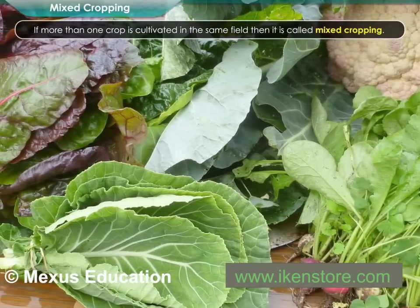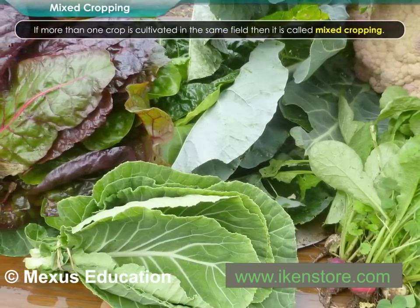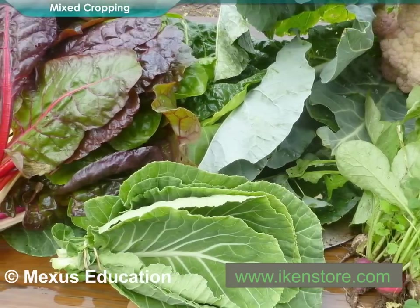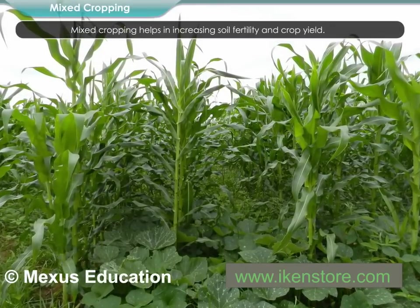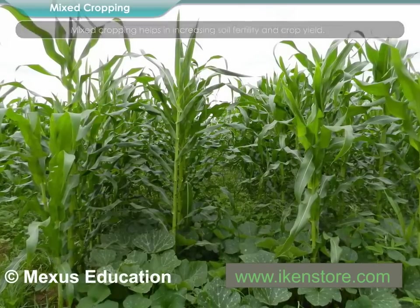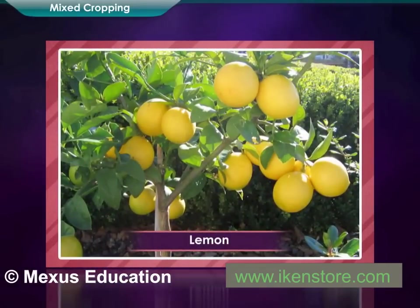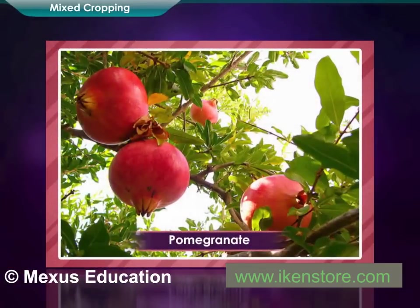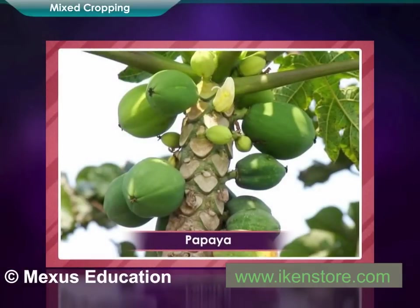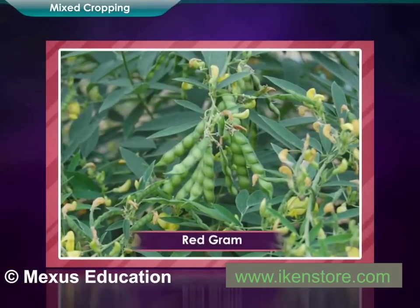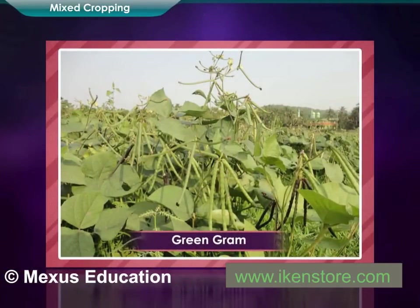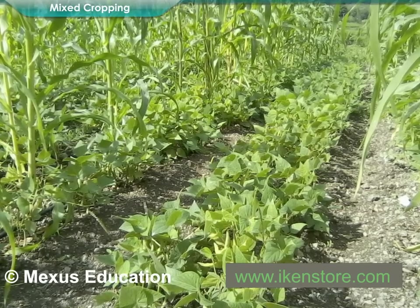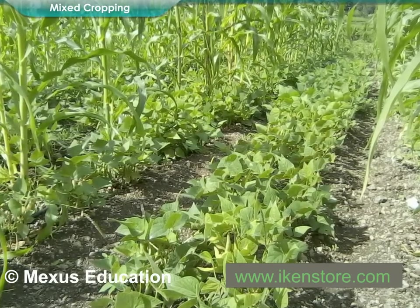If more than one crop is cultivated in the same field, it is called mixed cropping. Mixed cropping helps in increasing soil fertility and crop yield. Pomegranate, papaya, and pulses like red gram, black gram, and green gram are cultivated as mixed crops. Growing corn with beans is an example of mixed cropping.